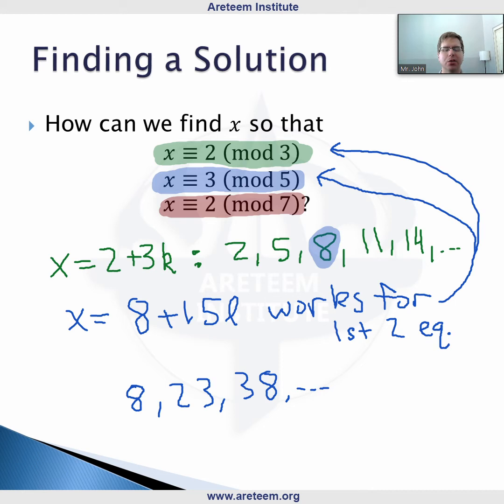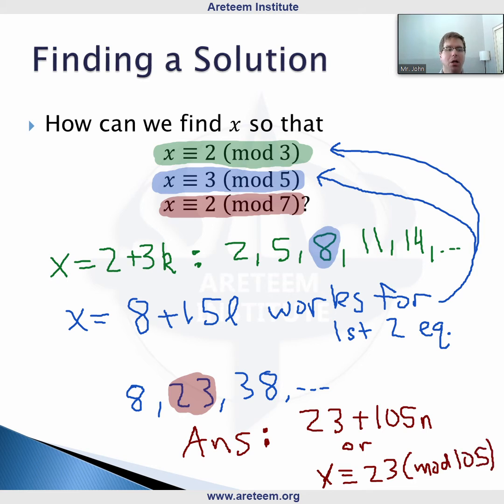Actually, 23 works in this scenario. So this tells us that our final answer and all of the answers are going to be 23 + 3 × 5 × 7, which is 105 times n for integer n. Or another way of thinking about this is we could write the answer as x ≡ 23 (mod 105).